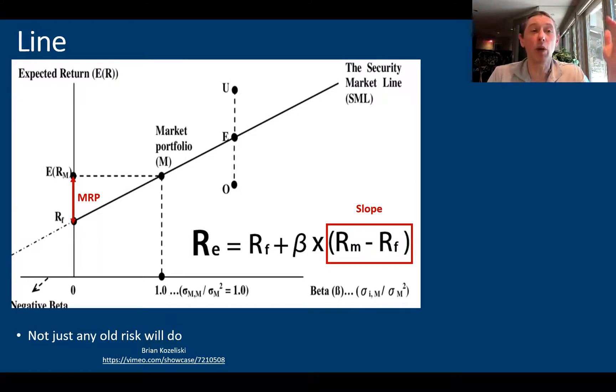So you can see here, if you can visualize, as you lower the risk-free rate, then that slope of the line steepens. And as you increase the expected return for the market, the slope of the line also would increase.